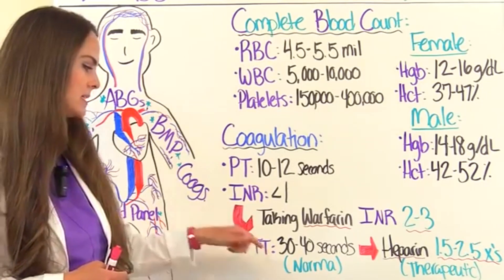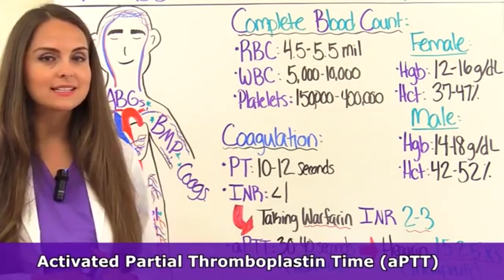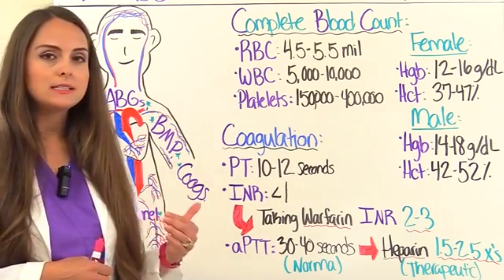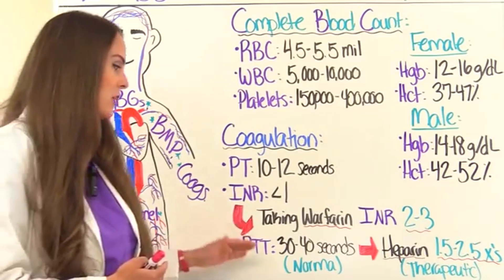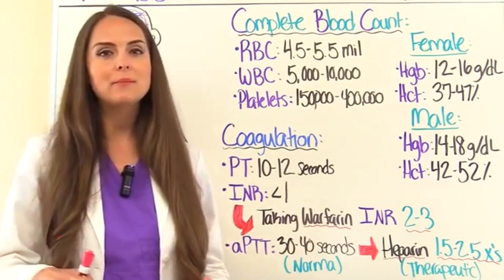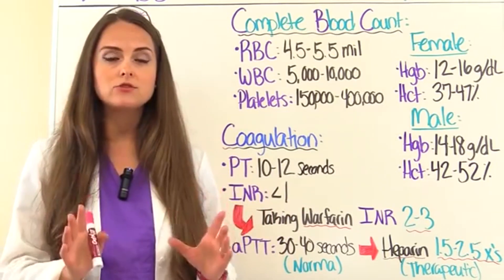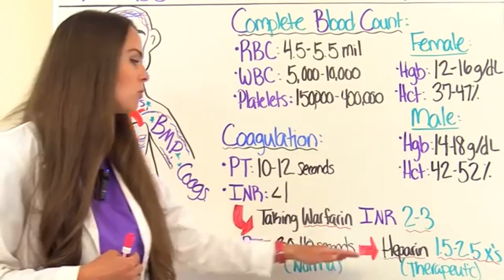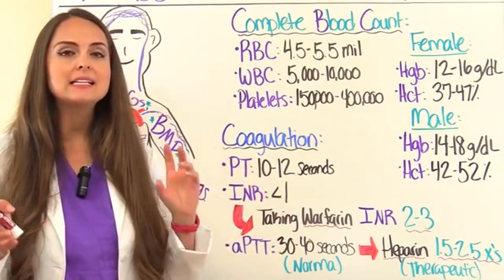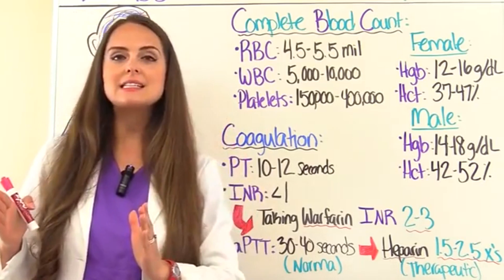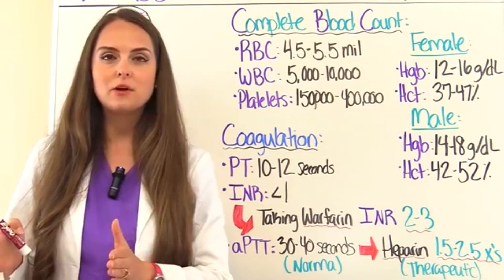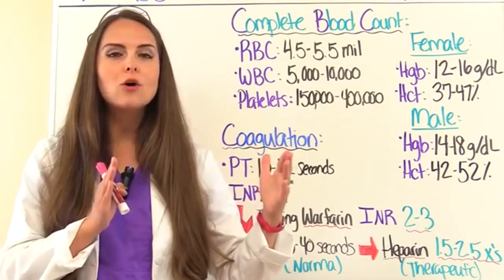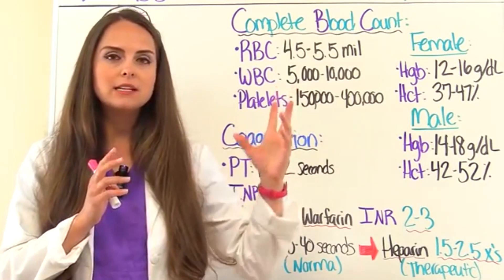The APTT stands for activated partial thromboplastin time and is used for patients taking heparin. A normal APTT in a patient not taking heparin is 30 to 40 seconds. If they're taking heparin, we want it to be 1.5 to 2.5 times the normal range, which ends up being about 60 to 80 seconds. Less than 60 means they're not therapeutic, so the dose needs to be increased. Greater than 80 seconds means too much heparin, so the dose needs to be decreased.